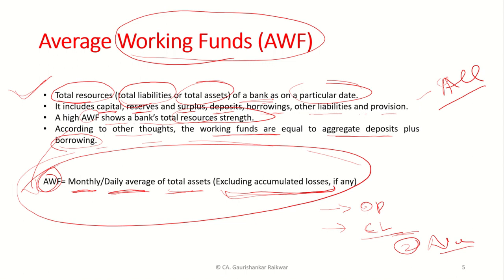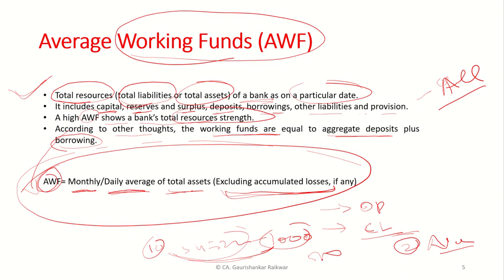If we calculate with this method, the average will give a real picture of a particular parameter. Otherwise, suppose my total at the beginning is 10 and at the close of the year is 1000 — the simple average would come around 500. But there can be a situation where your assets are only 5, 4, 3, 2, 4, 1 throughout the year, and in that case if we calculate the average, there will be a huge difference. So for calculating the average, we take into consideration the average of the entire year — ideally on a monthly or daily basis.